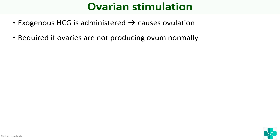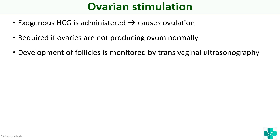Ovulation induction is required if the ovaries are not producing ovum normally, which may be because of decreased FSH and LH levels. That is why we give them gonadotropins so that FSH and LH work properly, and you get more ovulation. The development of follicles is monitored by transvaginal ultrasonography.